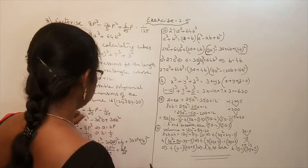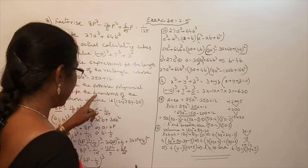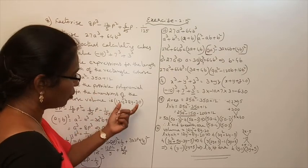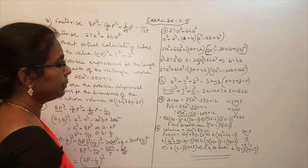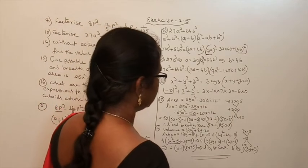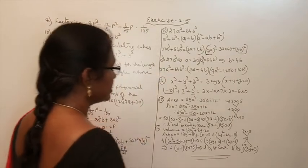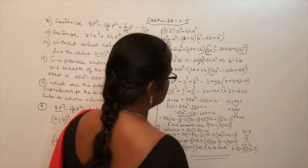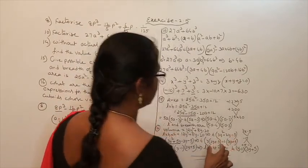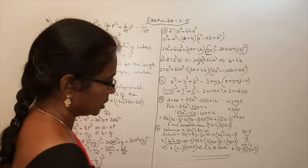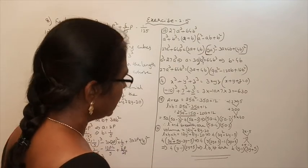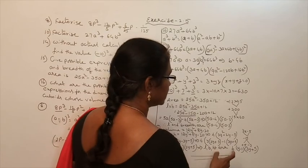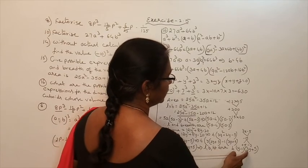So when the volume of a cuboid is given as a quadratic polynomial, first take out the common factor — that gives one dimension. Then factor the remaining quadratic polynomial to get the other two factors, which are the remaining breadth and height. The dimensions are 4, (y minus 1), and (3y plus 5).